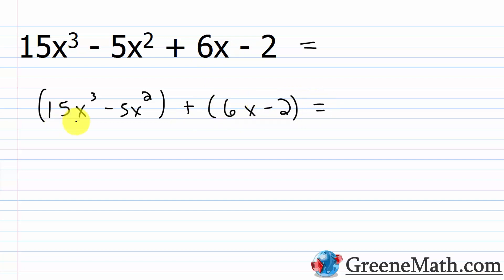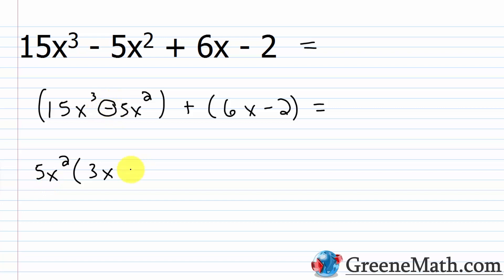What can I pull out from 15x³ - 5x²? The greatest common factor is 5x². Pulling that out: 15x³ ÷ 5x² = 3x, and 5x² ÷ 5x² = 1, so we have 5x²(3x - 1). Then from 6x - 2, the GCF is 2. Pulling that out: 6x ÷ 2 = 3x, and 2 ÷ 2 = 1, so minus 1, giving 2(3x - 1).